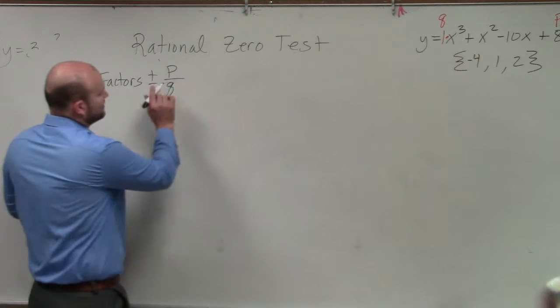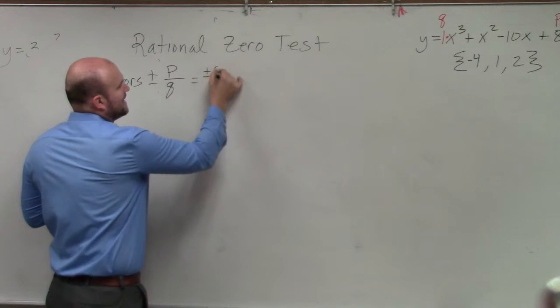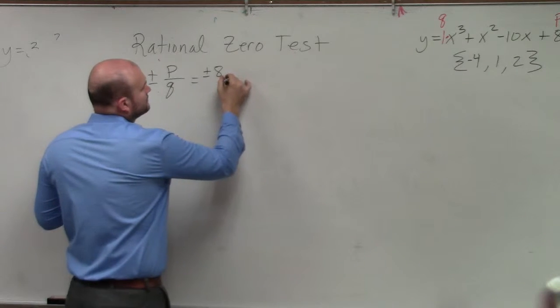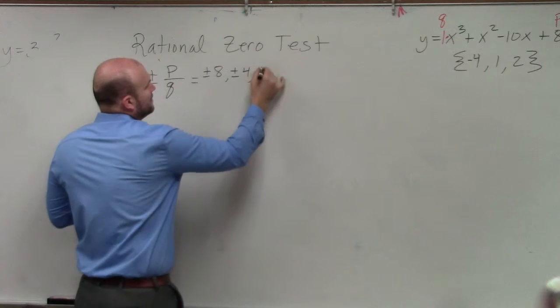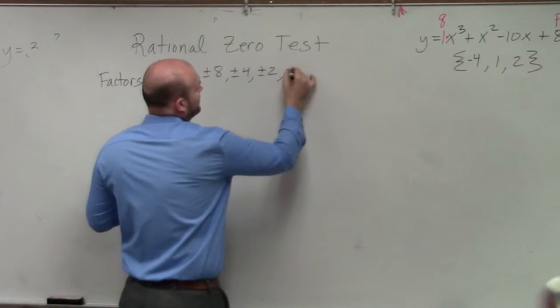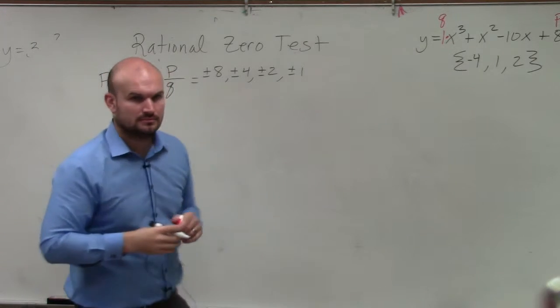So let's write out the factors of p. Well, what we have is plus or minus 8, you have plus or minus 4, plus or minus 2, plus or minus 1. Would everybody agree with me? Yes?